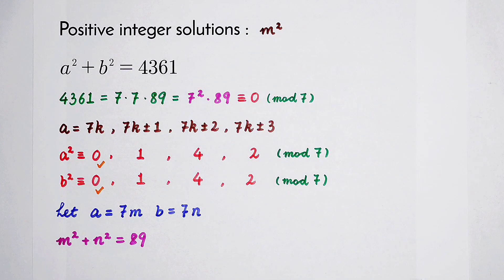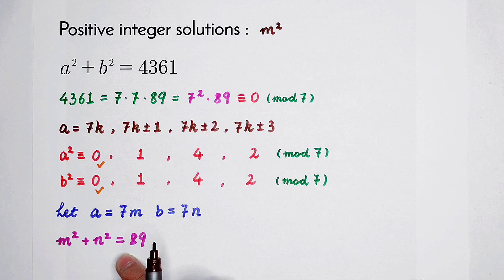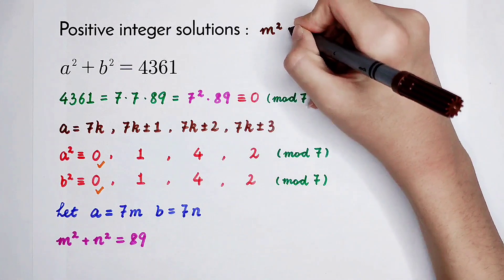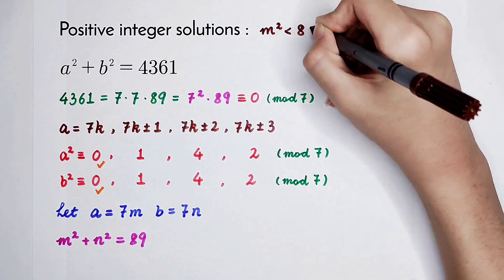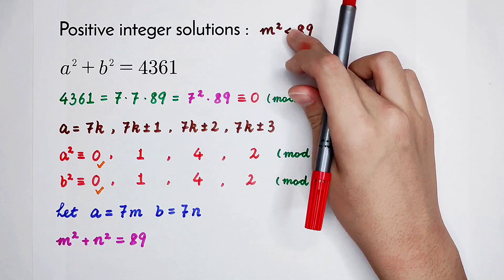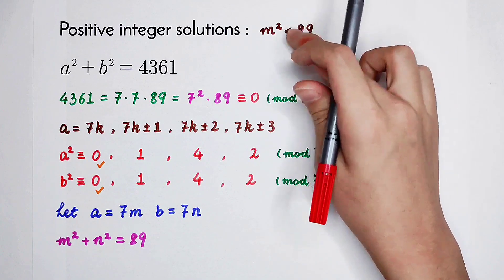m squared equals 89 minus n squared. Since n squared is always greater than 0 because n is a positive integer, m squared is always less than 89. Now we are going to look for the square numbers which are less than 89.